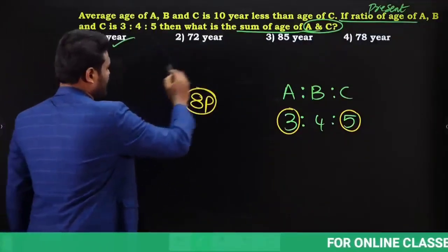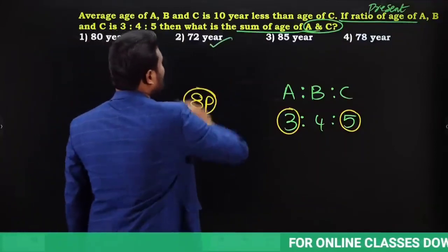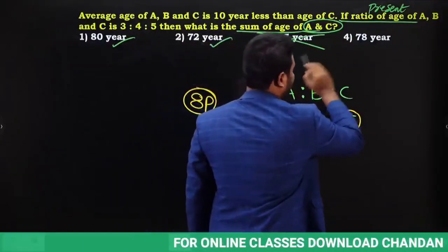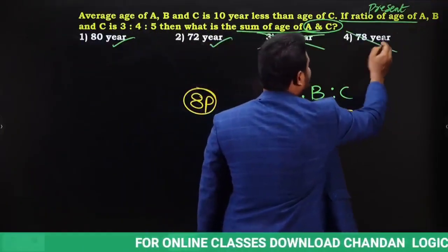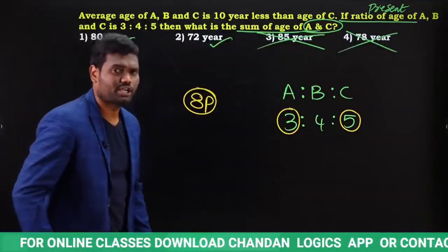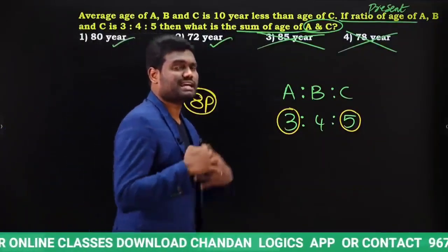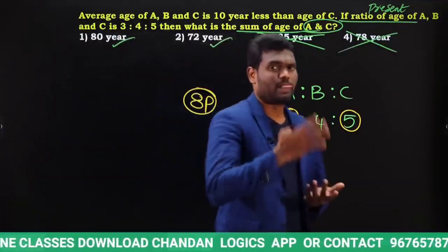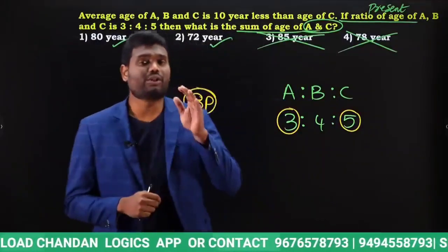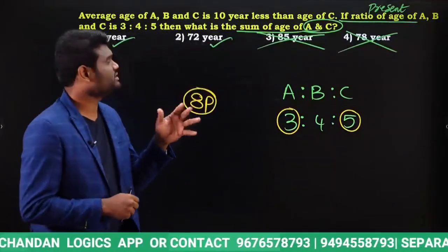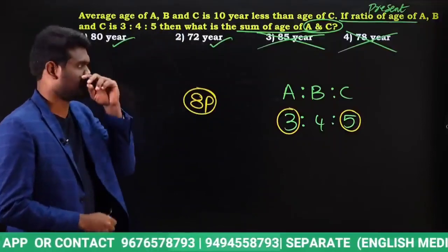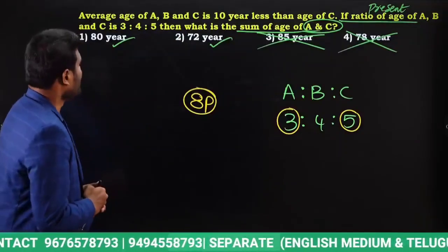Checking the options: 80 is a multiple of 8 — keep it. 72 is a multiple of 8 — keep it. 85 is not a multiple of 8 — eliminated. 78 is not a multiple of 8 — eliminated. So out of 4 options, 2 are eliminated and we are left with 2. Now read the remaining information in the question carefully.